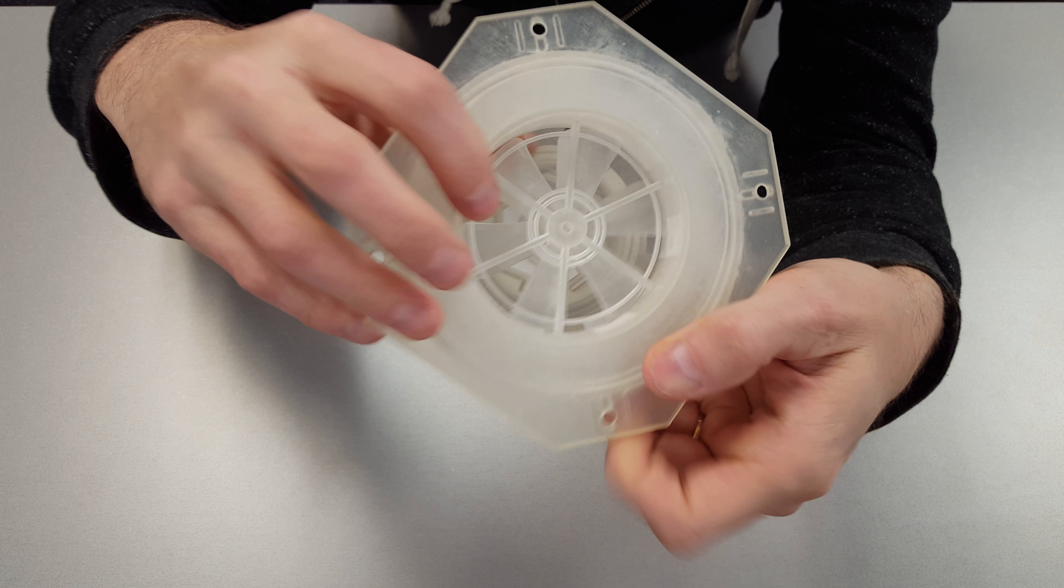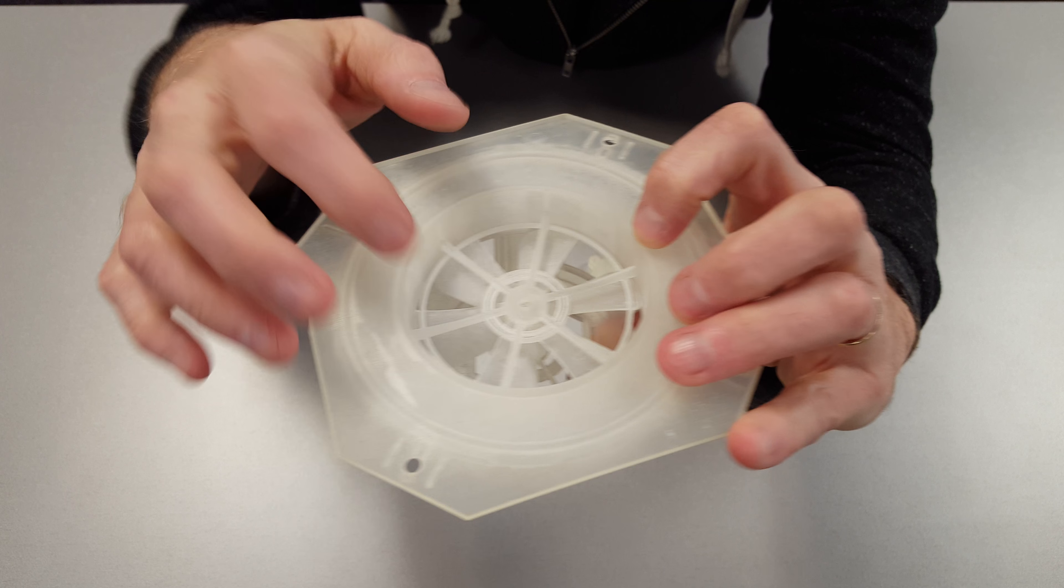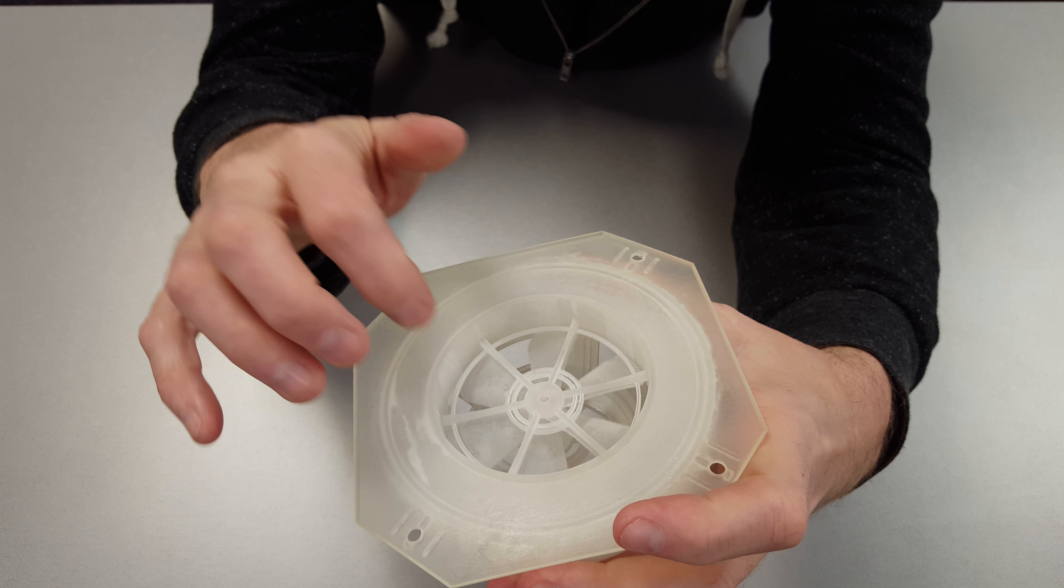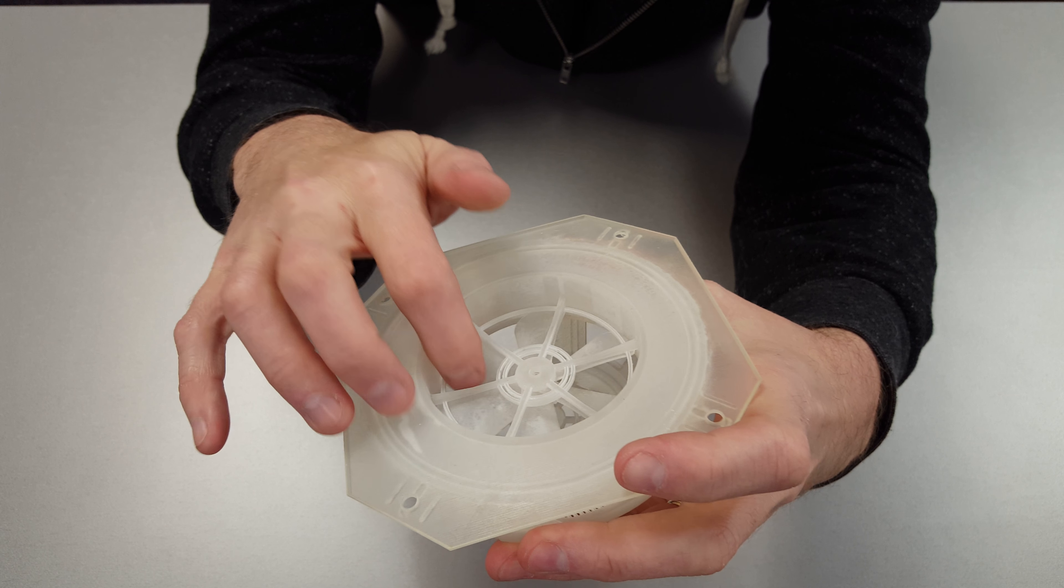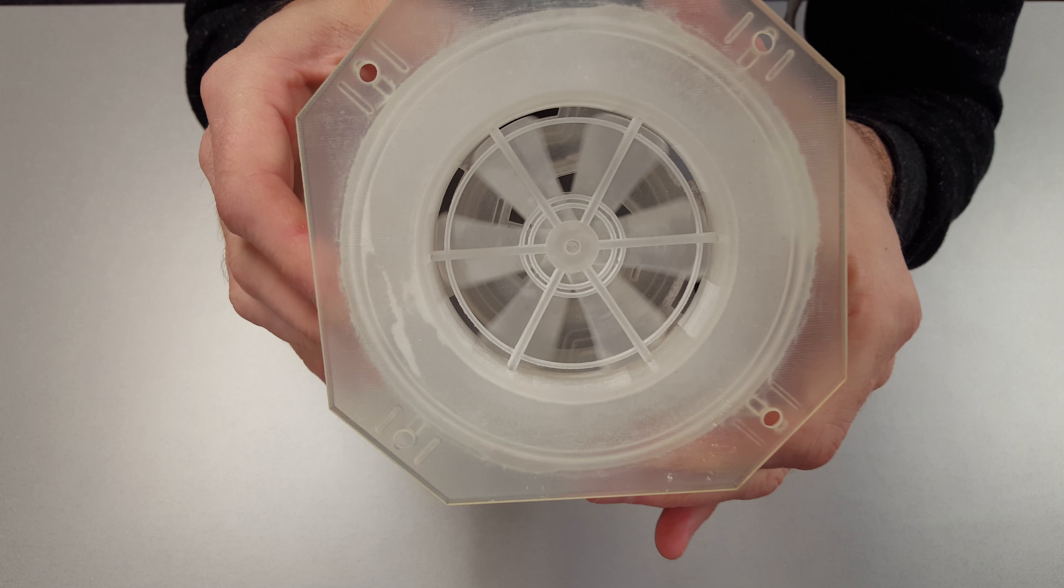This blade on the inside is free spinning. It was printed with space around the shaft, and when the wax is removed in the secondary process, the blade is left free spinning. I will show you that like so.